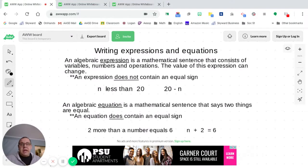So let's begin taking a look here at what is an expression and what is an equation. As you can see here on the screen, if you want to follow along as I read it, an algebraic expression is a mathematical sentence that consists of variables, numbers, and operations.